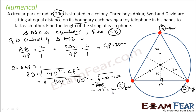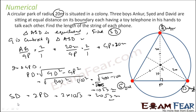PD equals 10 root 3 meters. Since the perpendicular from center bisects the chord, SD equals twice PD, which is 2 times 10 root 3, giving 20 root 3 meters. So the length of one phone wire is 20 root 3 meters. There are three such wires, so the total length is 20 root 3 times 3, which is 60 root 3 meters.